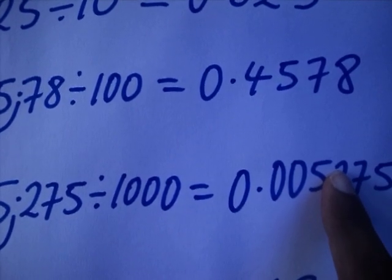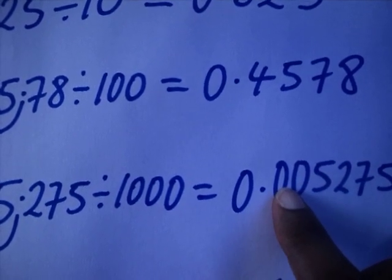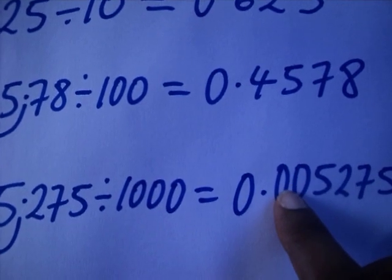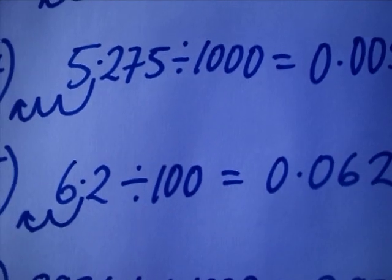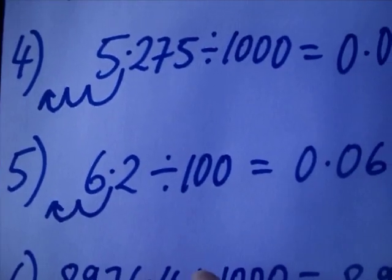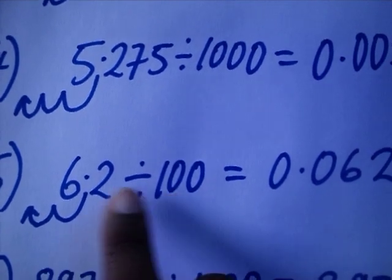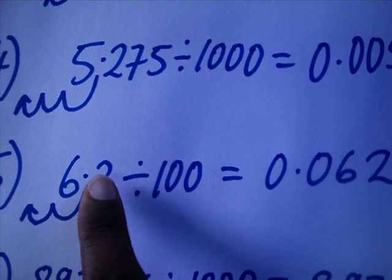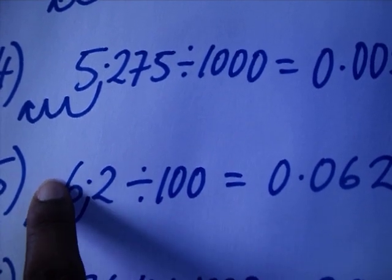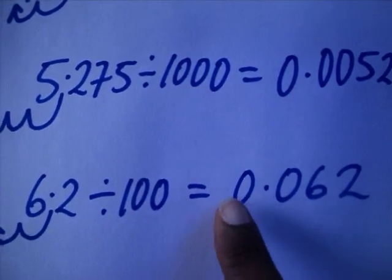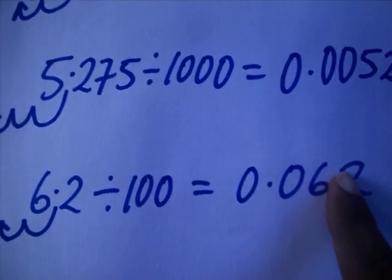Again, it was there — you shifted it three times: once, twice, three times — putting zeros as needed, and your point comes there. For example, 0.026 divided by 100: I'm going to shift the point twice in that direction — once, twice — you put a zero here, giving you 0.00026. The point was there, shifted once and twice.